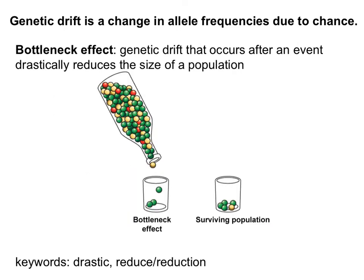The first type of genetic drift is the bottleneck effect — genetic drift that occurs after an event drastically reduces the size of a population. It's random and could be a natural disaster. Because it randomly kills individuals with nothing to do with their strengths, it can change the allele frequency. In this bottle, we start with a huge mix of green, red, and yellow, but only a few make it into the surviving population, and the red allele completely dies out. Keywords: drastic, reduce, or reduction.